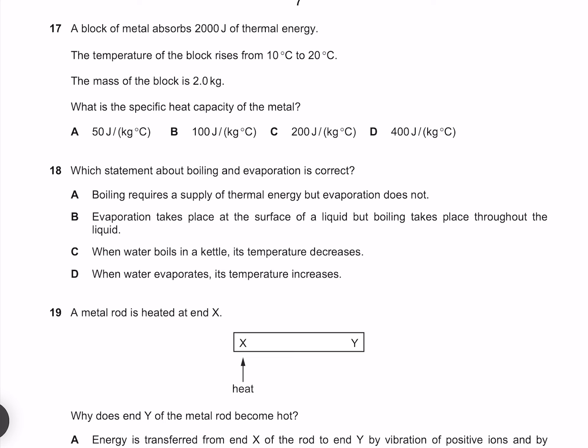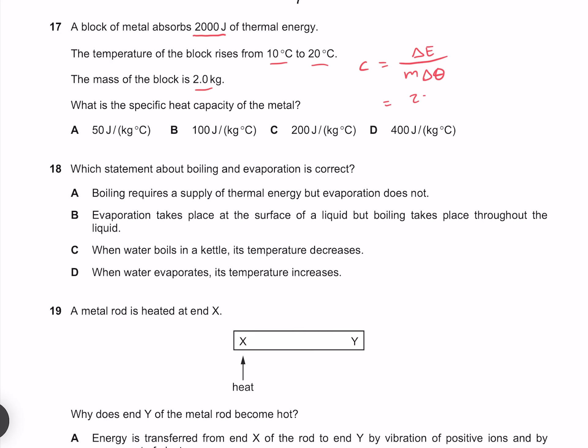A block of metal absorbs 2000 joules of thermal energy. The temperature of the block rises from 10 degrees Celsius to 20. The mass of the block is 2 kilograms. What is the specific heat capacity of the metal? Specific heat capacity is given by the change in energy divided by the mass times the change in temperature. Our change in energy is 2000, our mass is 2, and our change in temperature is 10, which gives us 100 joules per kilogram degree Celsius. So our answer is B.